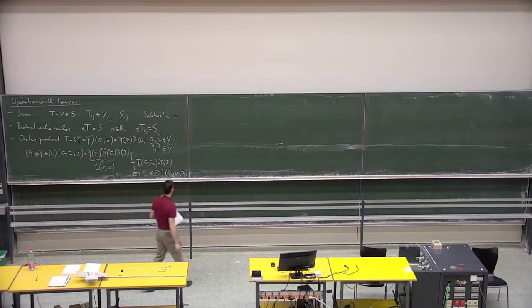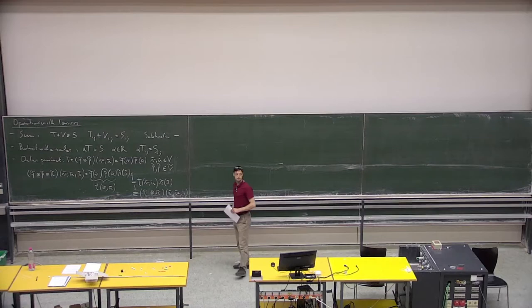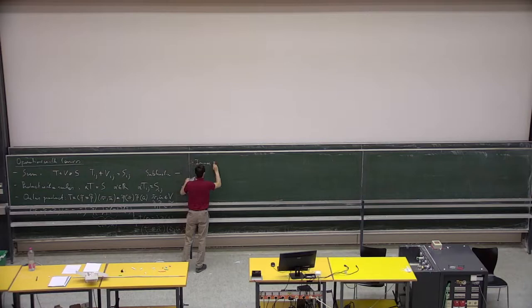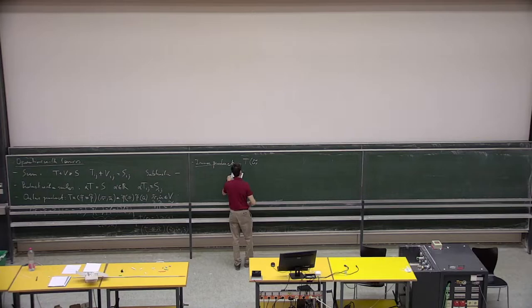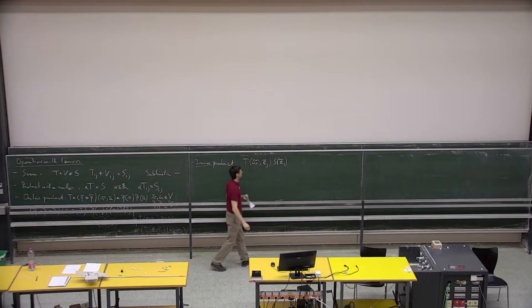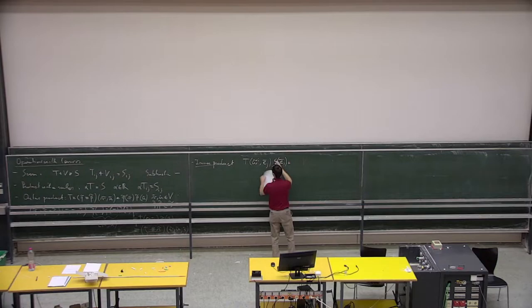Then we have the inner product. In an inner product we might have, for instance, a tensor T which swallows one-forms (index up) and vectors (index down), applied to a tensor with the basis E repeated twice — E_j up and E_j down. We see that the components give us E_j up and E_j down, then the component of S with E down.